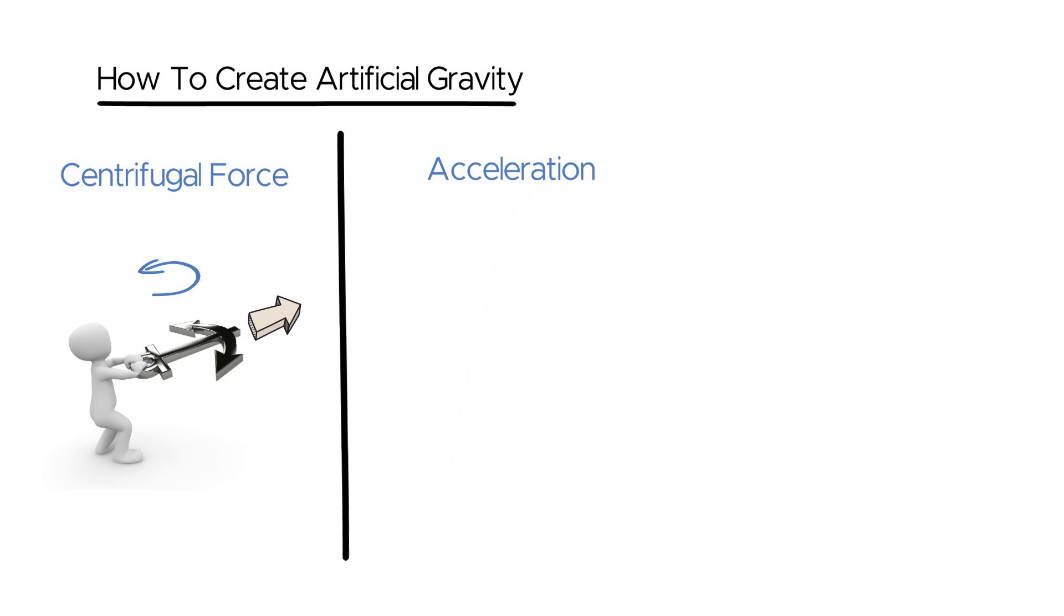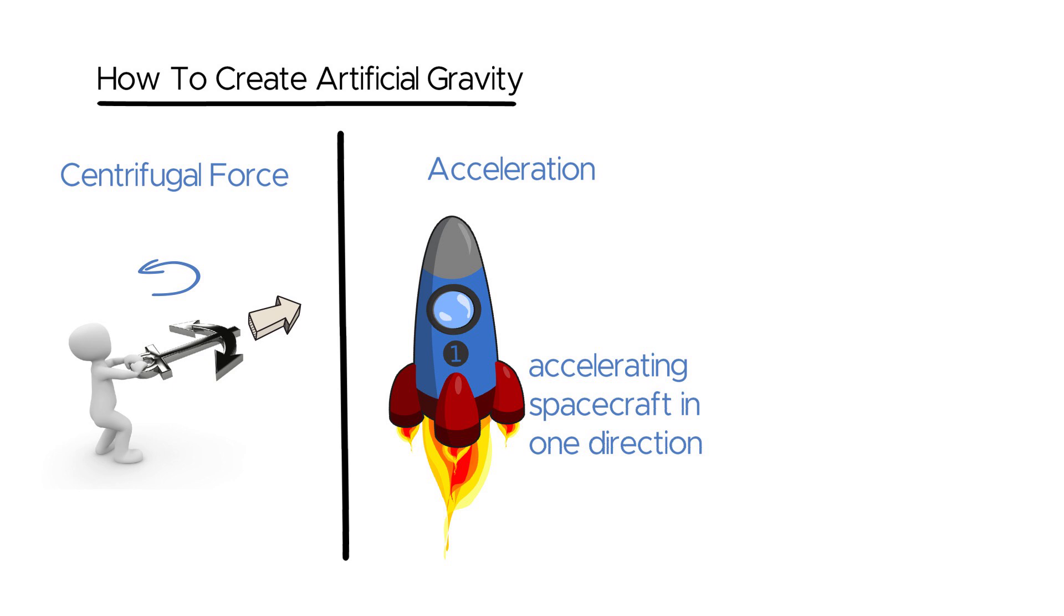Another approach is to use constant acceleration to simulate gravity. This method involves continuously accelerating the spacecraft in one direction, creating a sensation of gravity due to inertia.